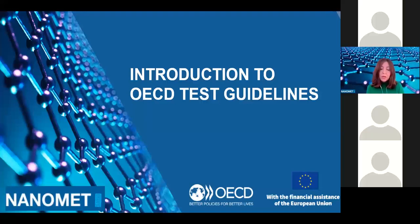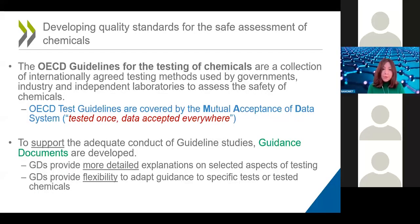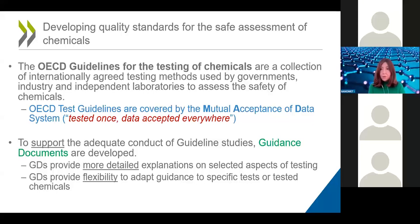I'll give a brief introduction on the OECD test guidance. At the OECD, we aim to develop quality standards for the safe assessment of chemicals. The OECD test guidelines are a collection of internationally agreed testing methods used by governments, industry, and independent laboratories to assess chemical safety. Behind this is the system called mutual acceptance of data, meaning that if you test once, the data is accepted everywhere, ensuring reliable and reproducible test methods. We also develop guidance documents that provide detailed explanation of selected aspects of testing.